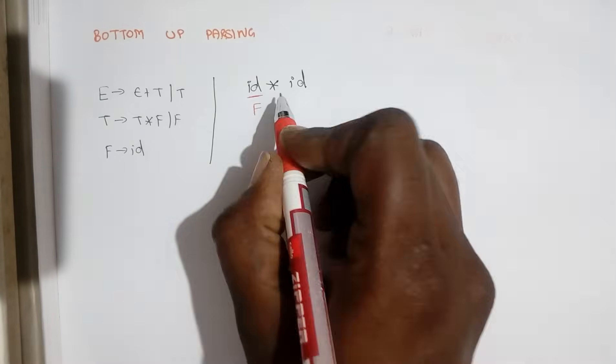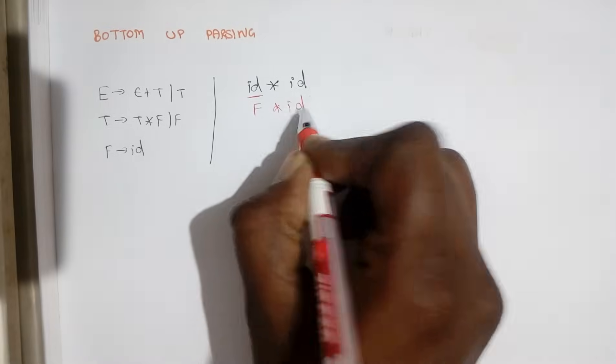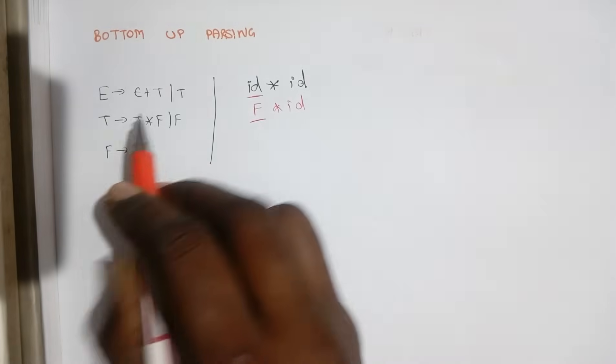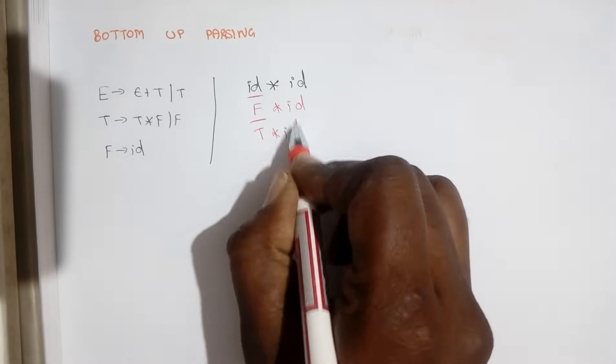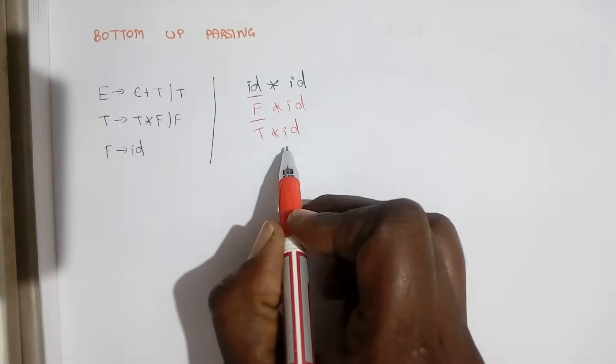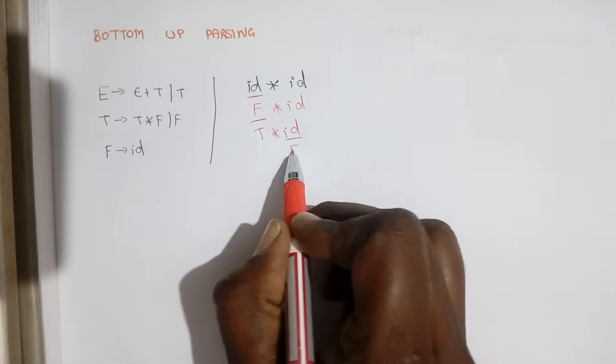we can replace this id to F and then F can be replaced with T tends to F. We can have T star id and again this id can be replaced with F.